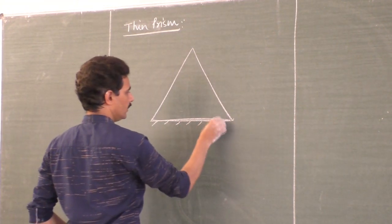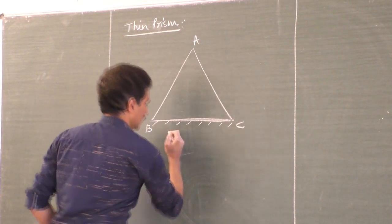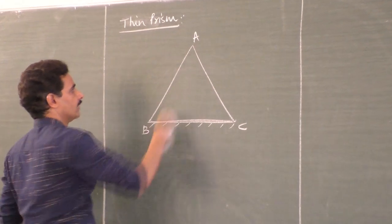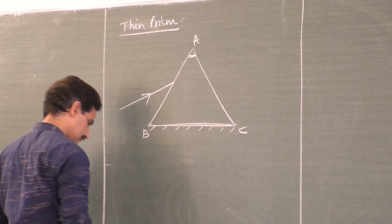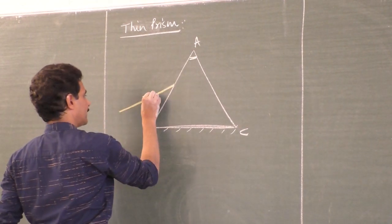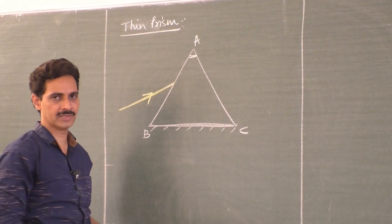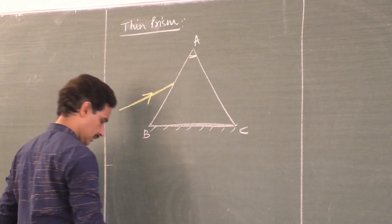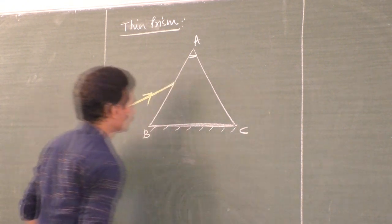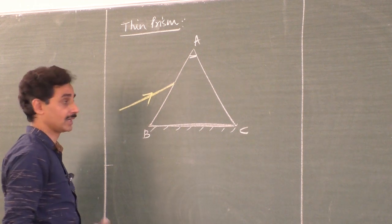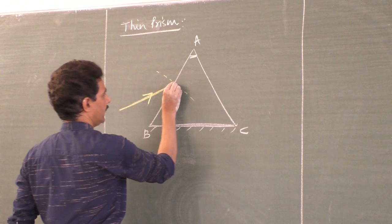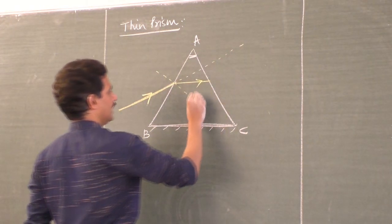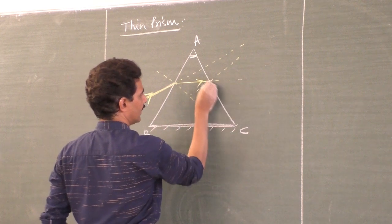This is the base of the prism, and this is the diagram we are going to draw again. ABC is the principal section of the prism. The prism is like this and you have cut it like this and you have got one face of the prism. Here is the angle of the prism, and the ray of light is incident like this. Keep on writing this. Don't be lazy. This is the best opportunity to learn very slowly and keep enough time after the classes start.